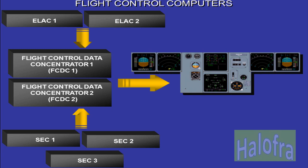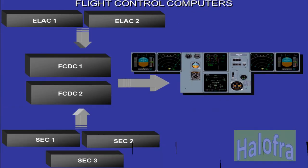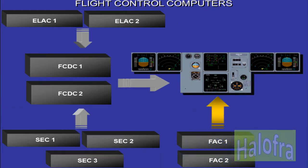The FCDCs interface with the ECAM system for surface position, computer status, and surface status, and interface with the DFDR for flying parameter recording. However, the data from both FCDCs is directly sent to the EIS.